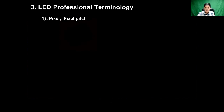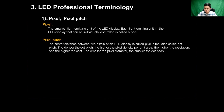So the third part — let's learn some professional terminology in LED displays. Before we learn more information: the first term is 'pixel.' What is a pixel? A pixel is the smallest light-emitting unit of an LED display. Each light-emitting unit in the LED display that can be individually controlled is called a pixel.